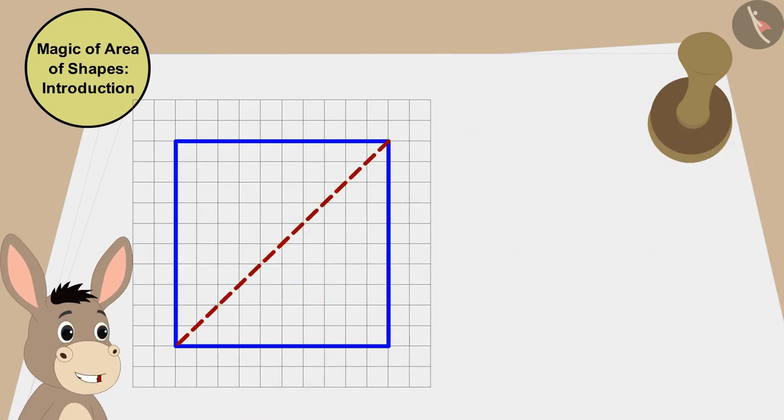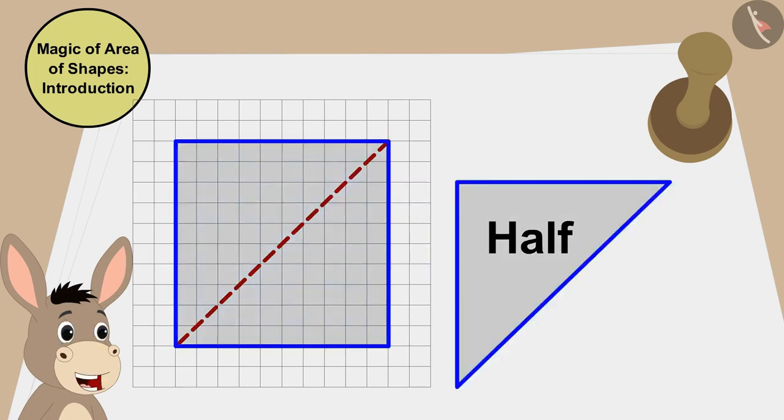If I draw a straight line like this, I will divide this cashew barfi into two equal triangles.